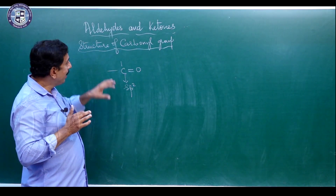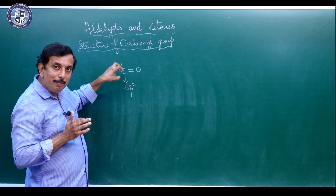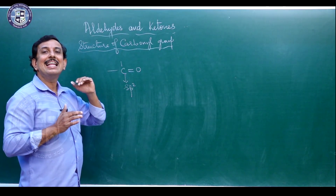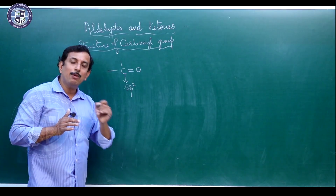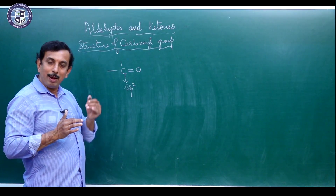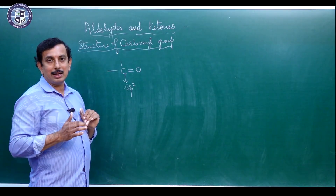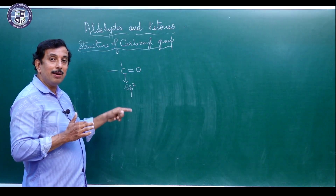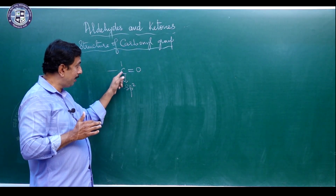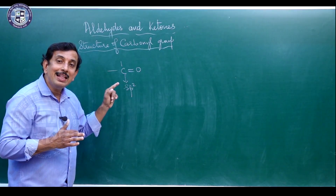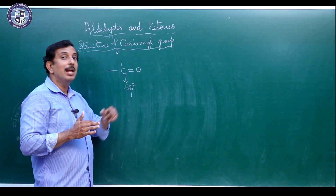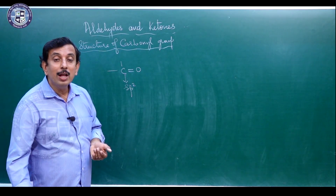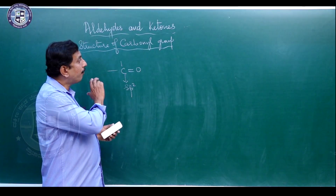In the carbonyl group, the carbon atom is SP2 hybridized. It forms three sigma bonds by utilizing the three SP2 hybrid orbitals, while the remaining one valence electron in the p orbital of carbon overlaps with the half-filled valence orbital of oxygen to form a C=O double bond. That is the structure of the carbonyl group.